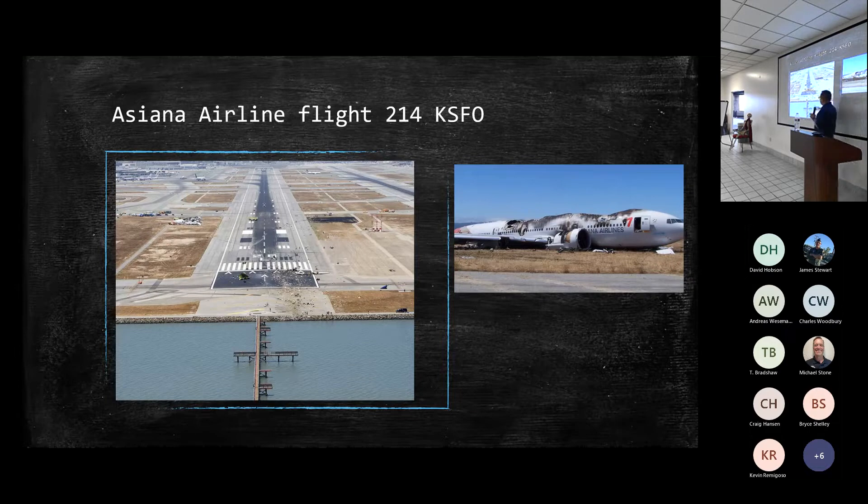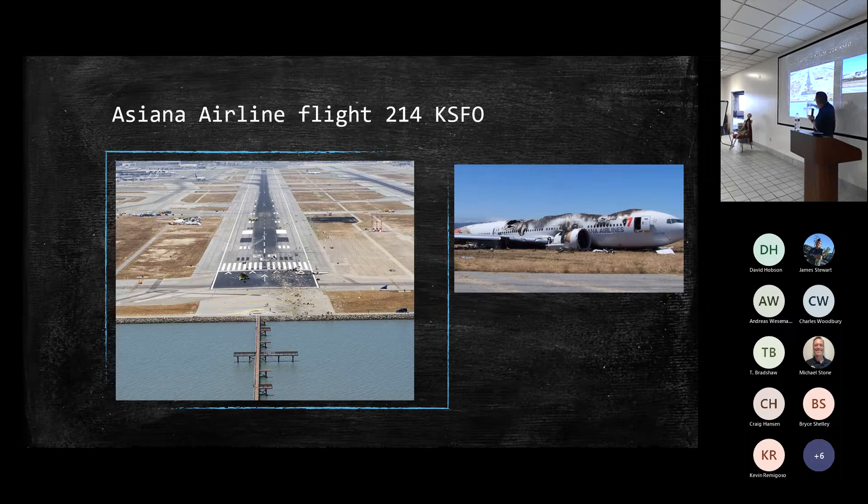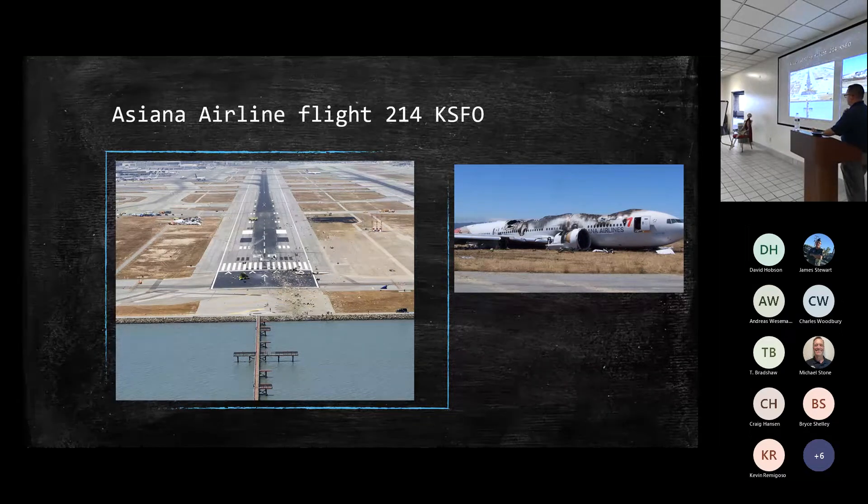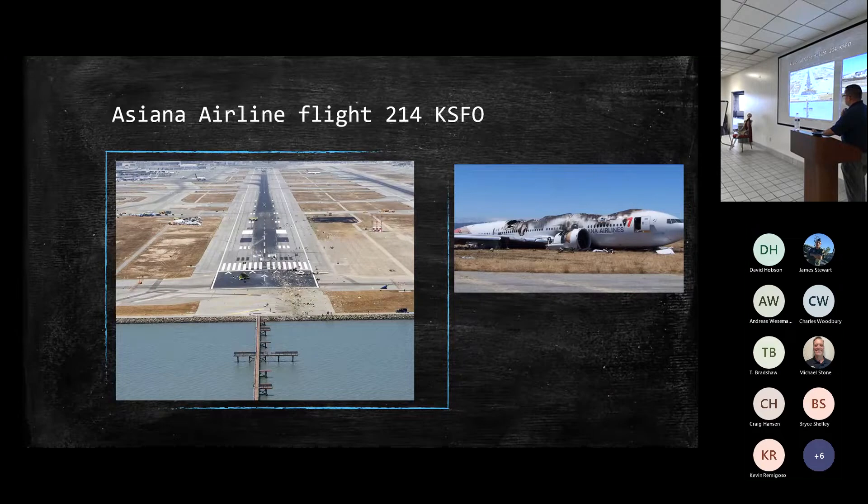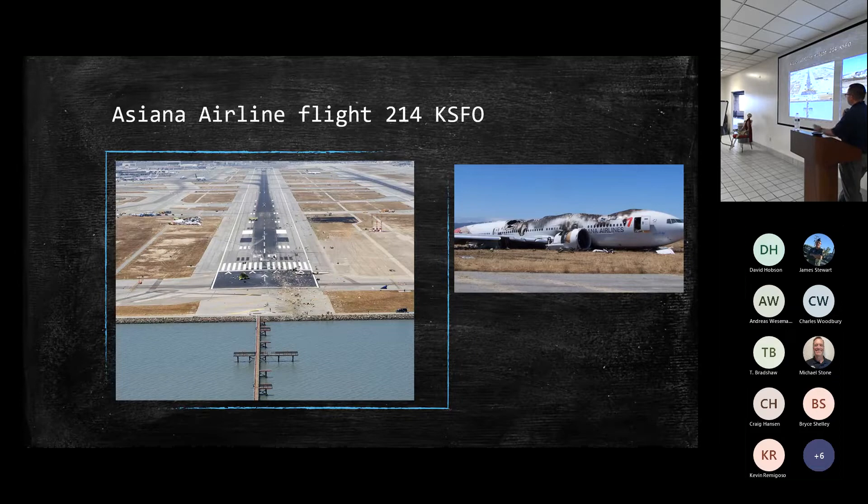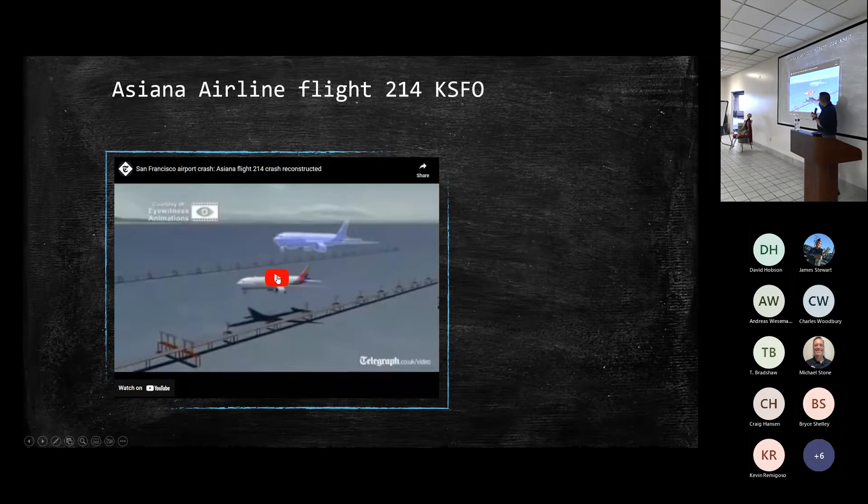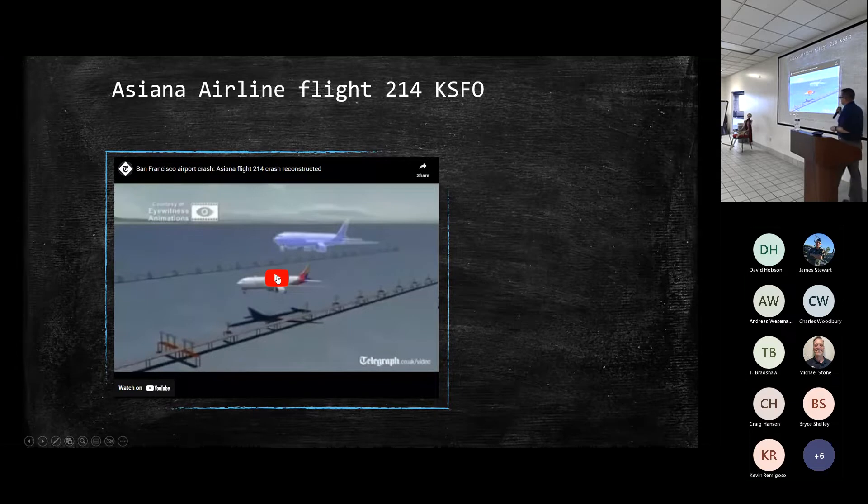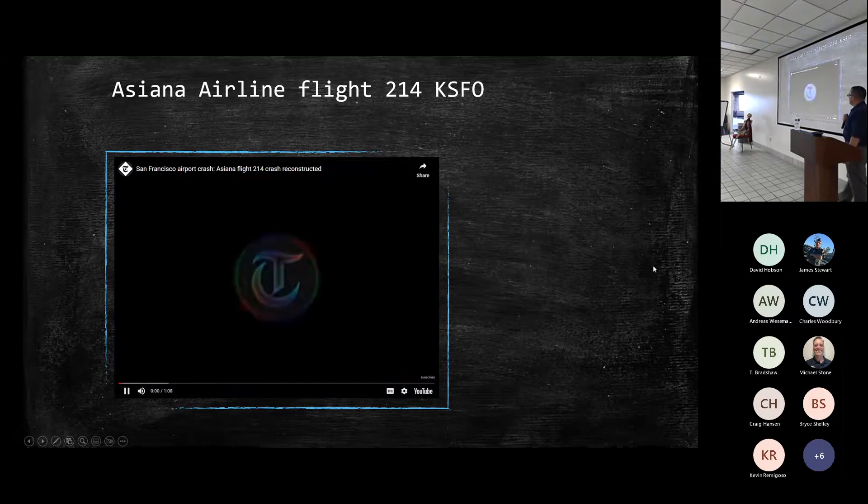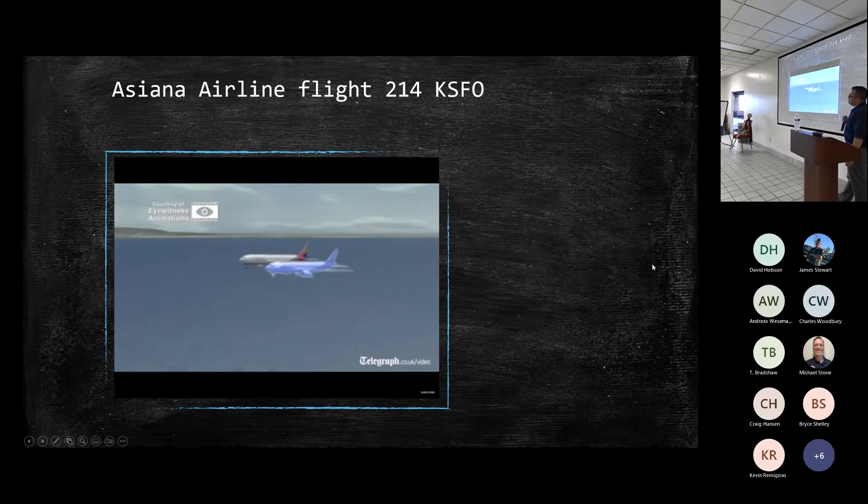So ultimately they came in really low below that glide path, the tail hit right on the bank here and then cartwheeled ended up over there. Surprisingly, like for number of fatalities, shocking that so many people survived. I was living in San Francisco at the time. I remember hearing on the news and I couldn't believe something like this in this day and age could happen. But ultimately, aircraft's lost there. This is a good visual of what it looks like for where the glide path they should have been and where they actually were. And then they built in the airplane system there as well.